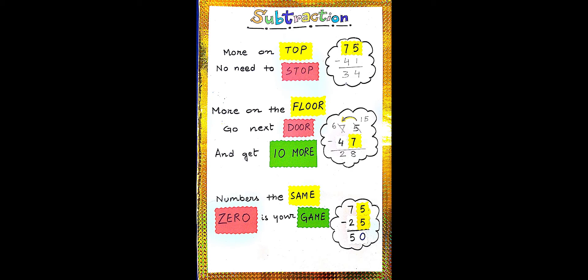In the ones column, 5 is less than 7, that is why we go to the next door — that is the tens column. And the last one: if the number is the same, 0 is your game. As both top and floor are 5, that is end of the game — the answer is 0.